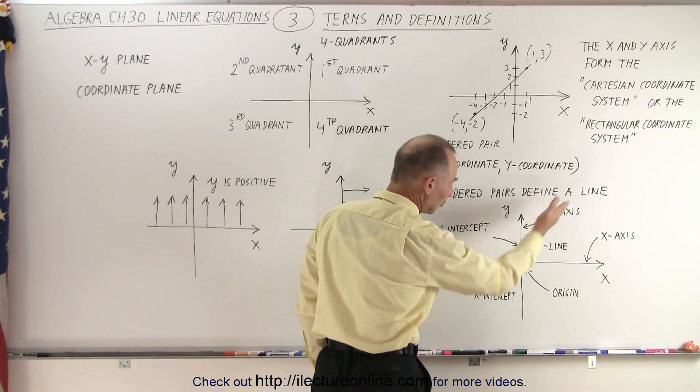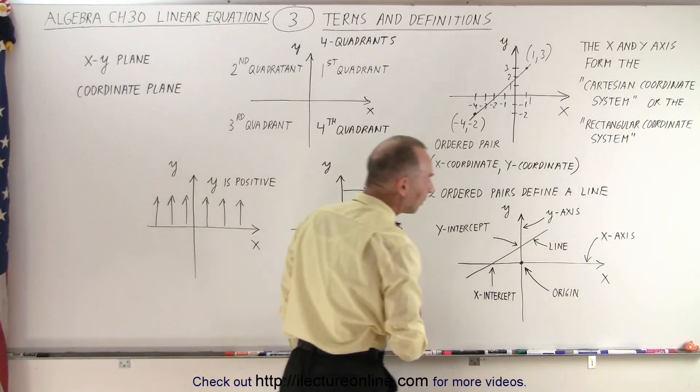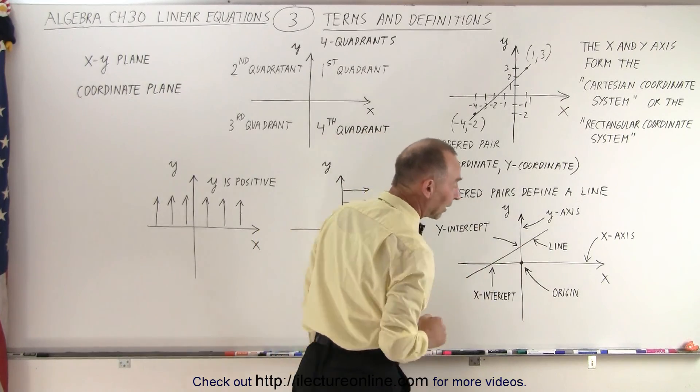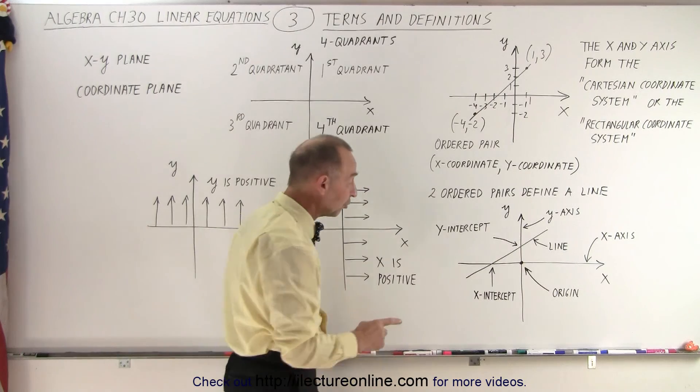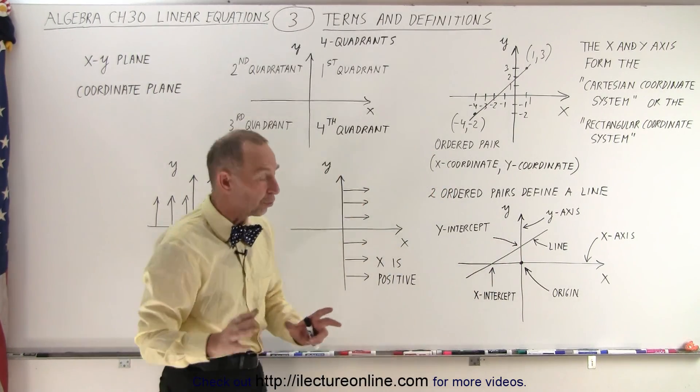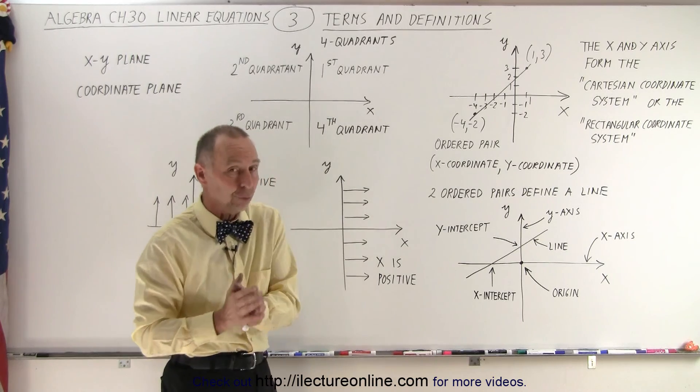Also notice that if we draw a line on the x-y plane, the line will typically cross both the x-axis and the y-axis. Those crossing points are called the x-intercept and the y-intercept. Not all straight lines or not all lines do have two intercepts.